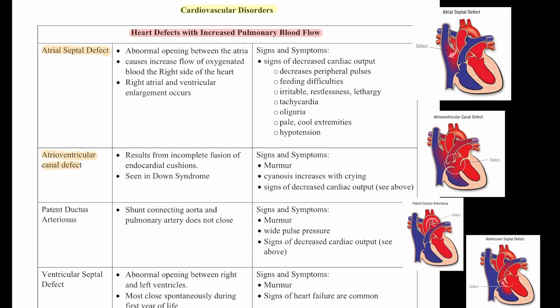The AV canal defect results from the incomplete fusion of the endocardial cushions, and this is seen in Down syndrome. Signs and symptoms include a murmur, cyanosis that increases with crying, and signs of decreased cardiac output, including decreased peripheral pulses,